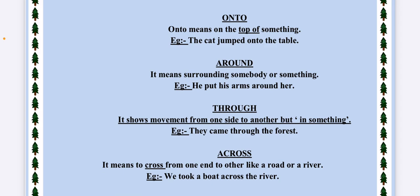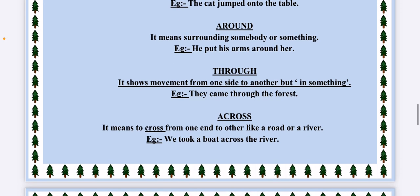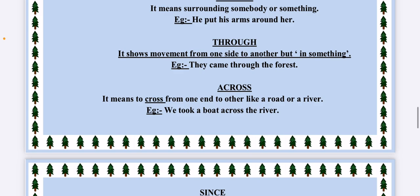THROUGH. Now the only difference between through and across is both mean to cross from one end to other, but through means that you are crossing through the middle of something. The dog went through the tunnel, so he is in the middle of that tunnel. And across means to cross from one end to other like a road or a river. We took a boat across the river.